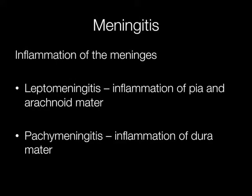There are two types of meningitis. Leptomeningitis, where there is inflammation of the pia and arachnoid mater, and pachymeningitis, which is inflammation of the dura mater. The pia and arachnoid mater are the thin membranous meninges that are closely adherent to the brain, and the dura mater is the thick fibrous covering just beneath the skull.